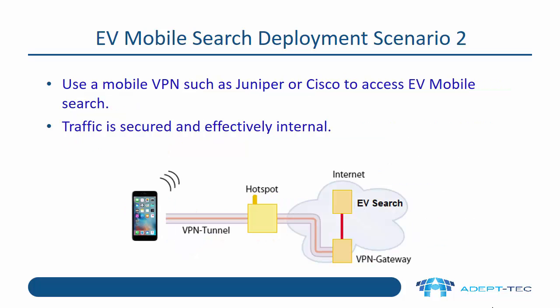Another option is to use a mobile VPN such as Juniper or Cisco to access the EV mobile search application. Traffic is secured using the normal encryption of the mobile VPN and is effectively internal.